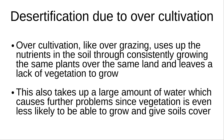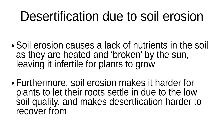Overcultivation, like overgrazing, uses up the nutrients in the soil through consistently growing the same plants over the same land and leaves a lack of vegetation to grow. This also takes up a large amount of water, which is another aspect to consider. Soil erosion is responsible for causing a lack of nutrients in the soil, resulting in barren land as direct sunlight bakes the soil, leaving it infertile for plants to grow and leaving the soil bare.